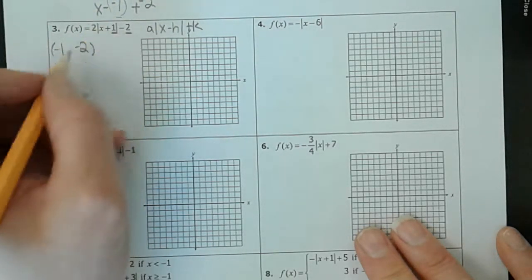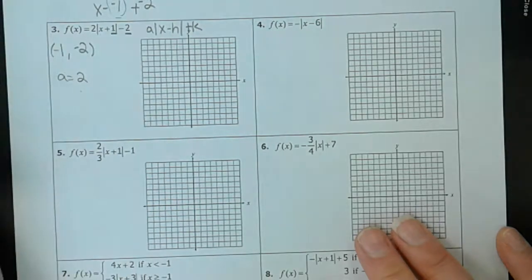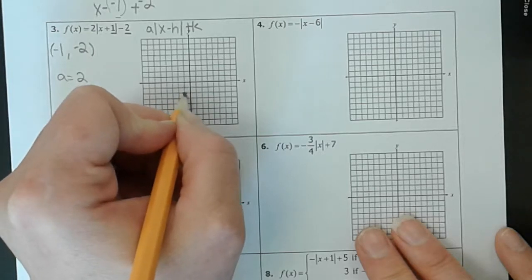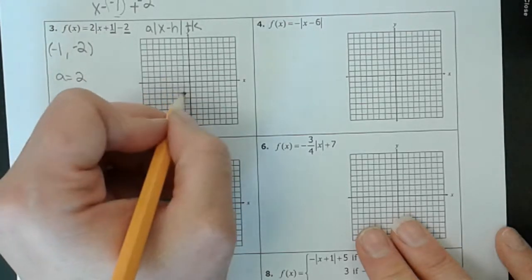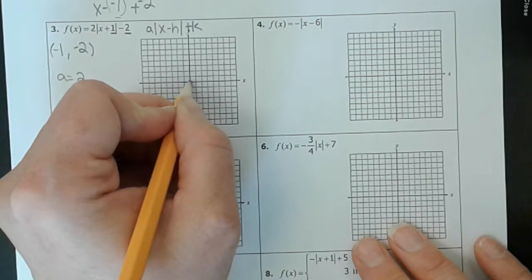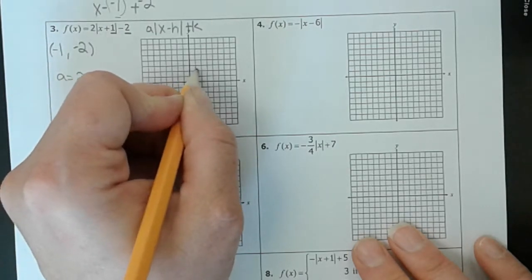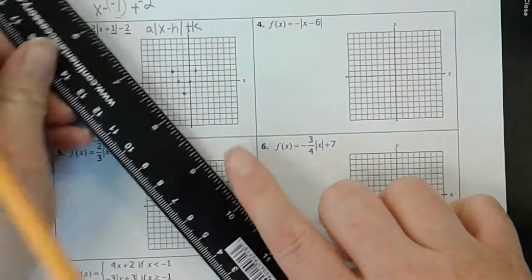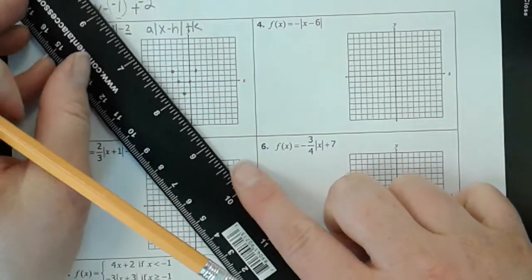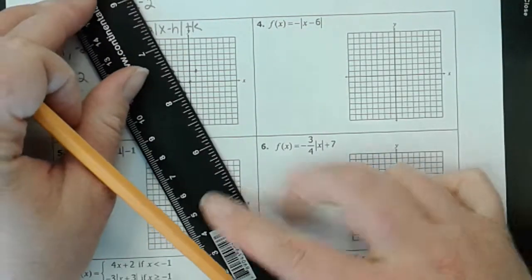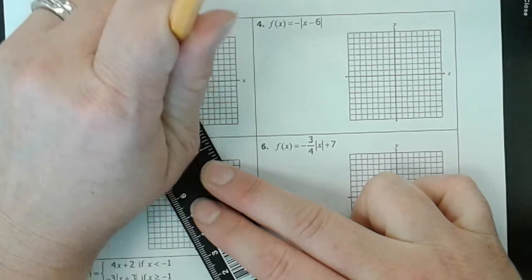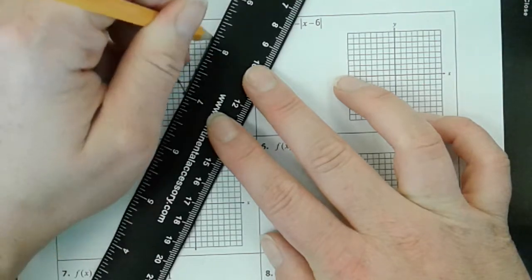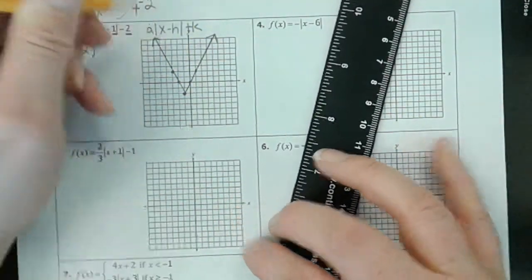And our slope of this line — of the one line — is 2, so the other line is negative 2. So we just graph this: negative 1, negative 2. And then we have a slope of 2 — up 2, over 1. There you go.